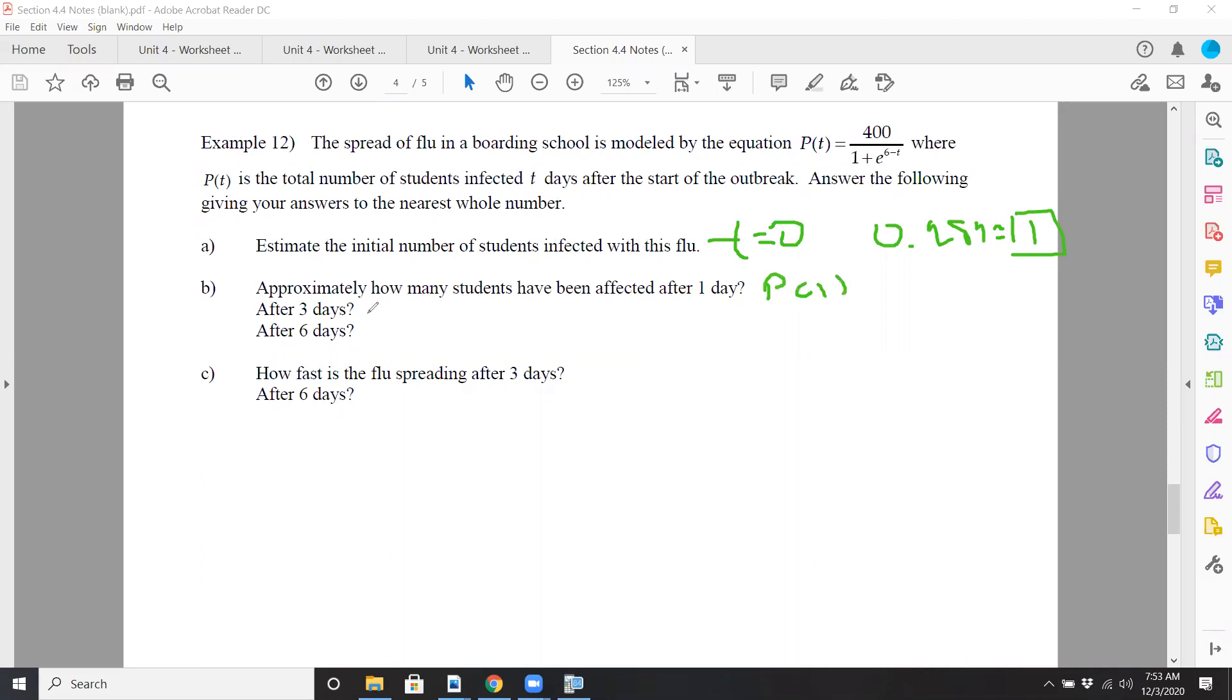So we're going to find P of 1, P of 3, and P of 6. And you're going to see it's going to increase quite quickly. Just so you know, 400 is what we call the limiting factor. So ultimately, you can't infect an infinite number of people. It's a very limited amount because you can only infect all the people at the school. If you let t be a really big number, ultimately, 400 people will be infected. So logistic functions kind of look like this graphically. Let's figure out how many people are affected after day 1, day 3, and day 6.